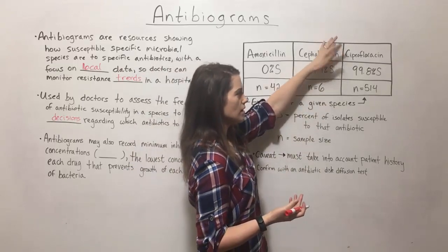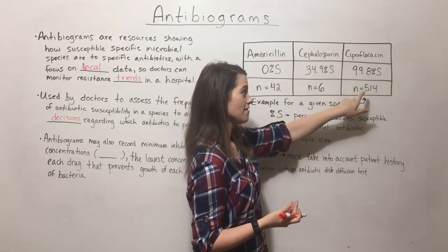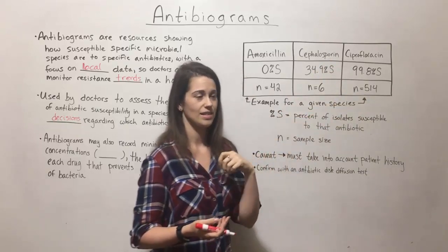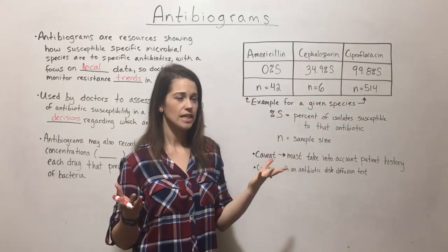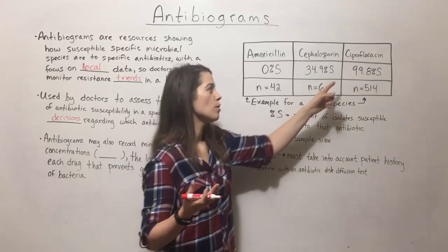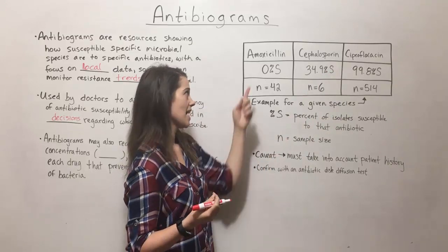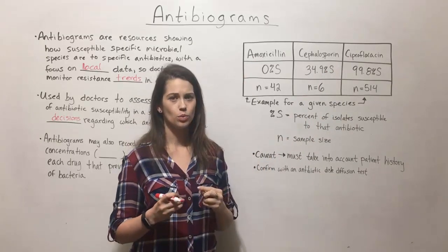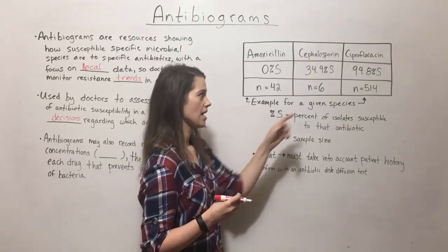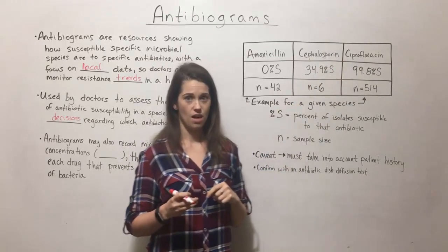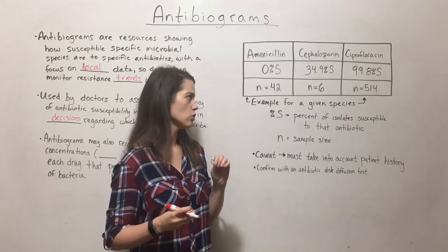With ciprofloxacin, you had 99.8% susceptibility and 514 isolates — that's great because that's a large sample size, and almost all of them were susceptible. So a doctor is going to look at this and say: amoxicillin is probably a bad idea against this particular species of bacteria. Ciprofloxacin, on the other hand, looks like a good bet, so that's what I'm going to prescribe.